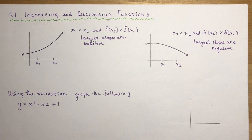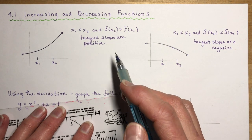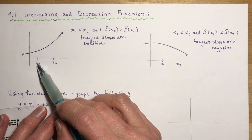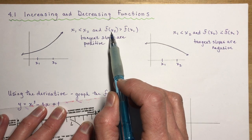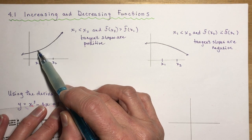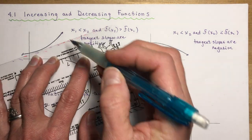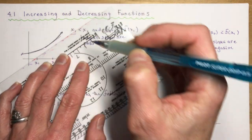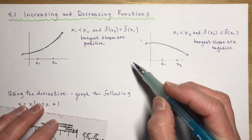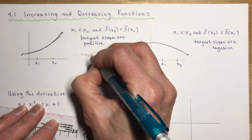To determine an increasing function: if x₁ is less than x₂ — say 1 and 4 — and f(x₂) is greater than f(x₁), then the tangent slopes are positive. You can see that tangent lines drawn to this curve all have positive slopes, meaning the function is increasing.